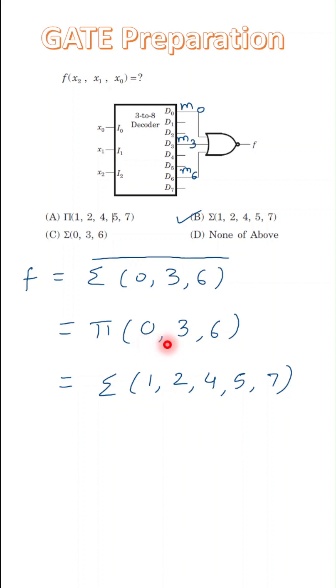So the product of maxterm will be 0, 3, 6, and the terms those are missing in the product of maxterm—that means 1, 2, 4, 5, and 7—will be considered as the minterms.